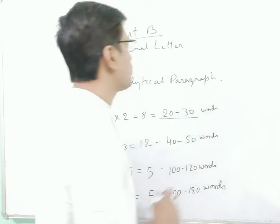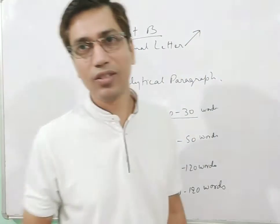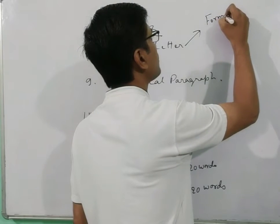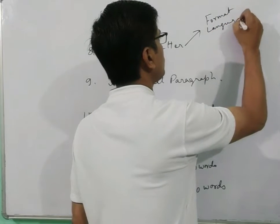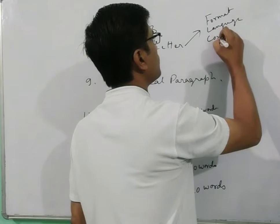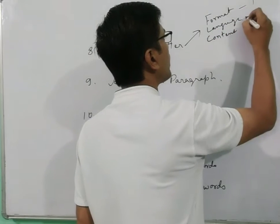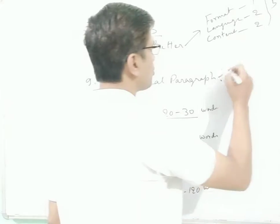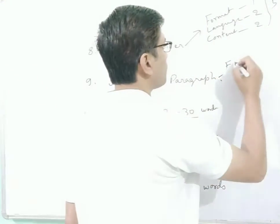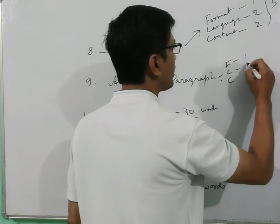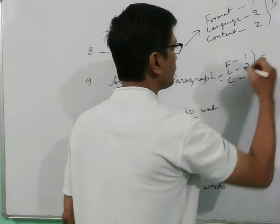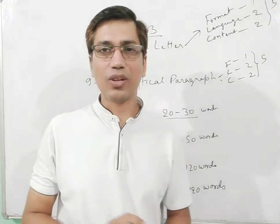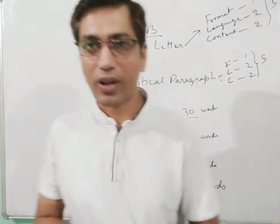Now let us talk about strategies for the formal letter. In a formal letter the marks are divided into format, language, and content. For format you get one mark, for language two marks, and for content two marks — five marks in total. The same is also true for the analytical paragraph: format one mark, language two, content two, totalling five. Both are writing portion questions.